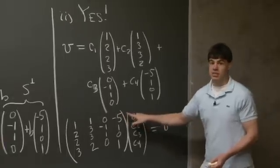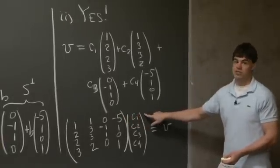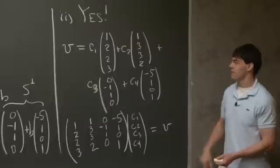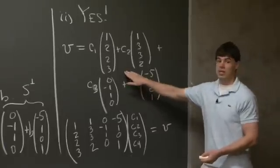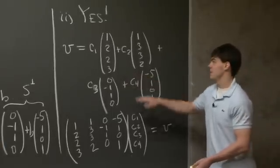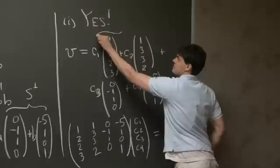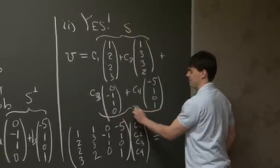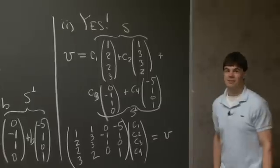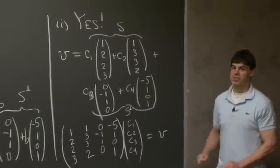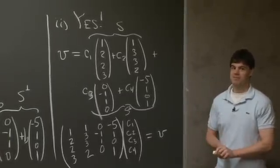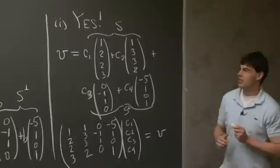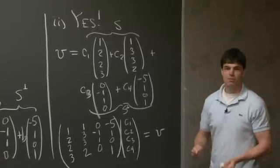What this means is for any v on the right-hand side, we can invert this matrix and obtain unique coefficients c1, c2, c3, c4. This then gives us a unique decomposition for v in terms of a piece which is in S and a piece which is in S perp. And in general, this can be done for any vector space. Well, I'd like to conclude this problem now, and I hope you had a good time.